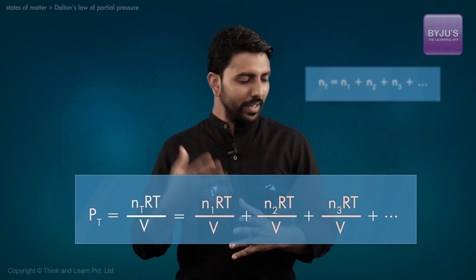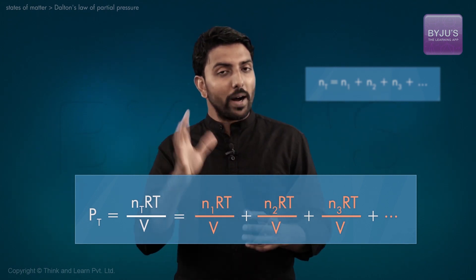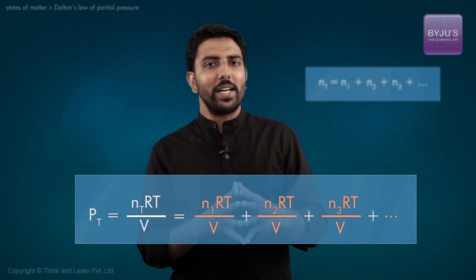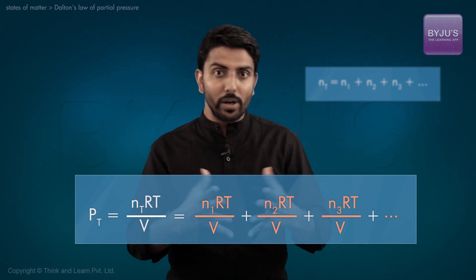The individual terms in the right-hand side of this equation represent the partial pressures of each component of the gas, or the pressures that each gas would exert if it were present alone in the container.